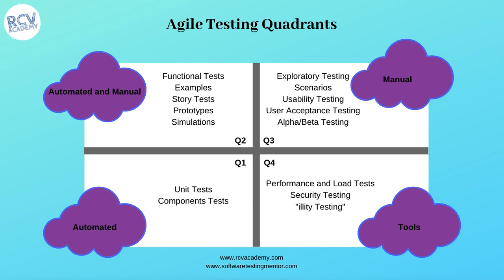Quadrant one, or Q1, is unit level, technology-facing, and supports the developers. Q1 contains unit and component tests, which are used to analyze and define software behavior and are written before the code is produced. Q1 tests should be mostly automated and included in the continuous integration process, because if not automated, the backlog will keep increasing in further iterations.